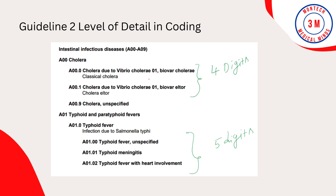Guideline 2: Level of Detail in Encoding. Diagnosis codes are to be used and reported at their highest number of characters available and to the highest level of specificity documented in the medical record. ICD-10-CM diagnosis codes are composed of codes with three, four, five, six, or seven characters. Codes with three characters are included in ICD-10-CM as the heading of a category of codes that may be further subdivided by the use of fourth, fifth, or sixth characters, which provide greater detail. A three-character code is to be used only if it is not further subdivided.